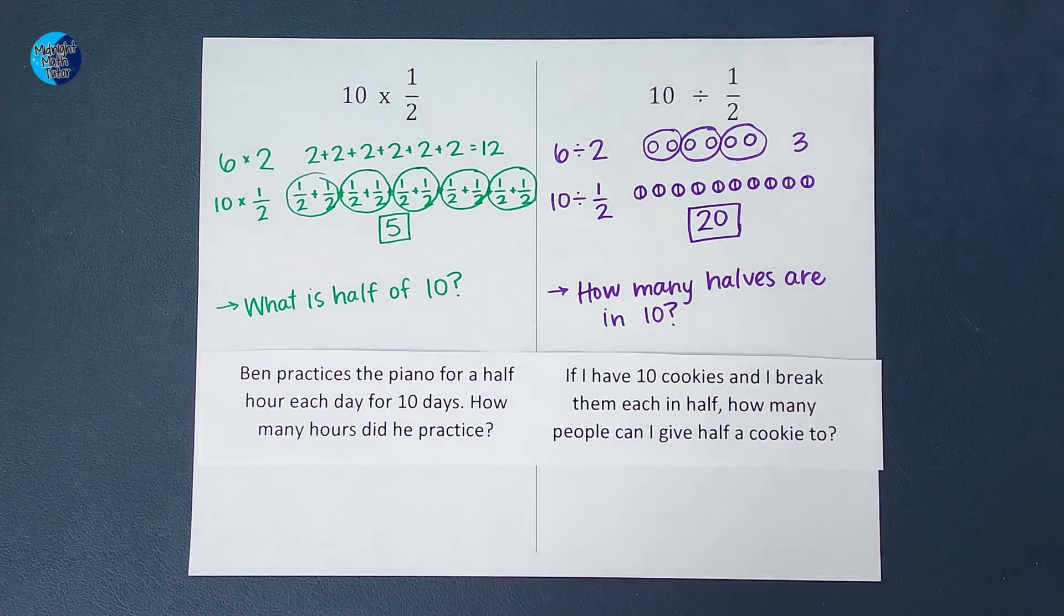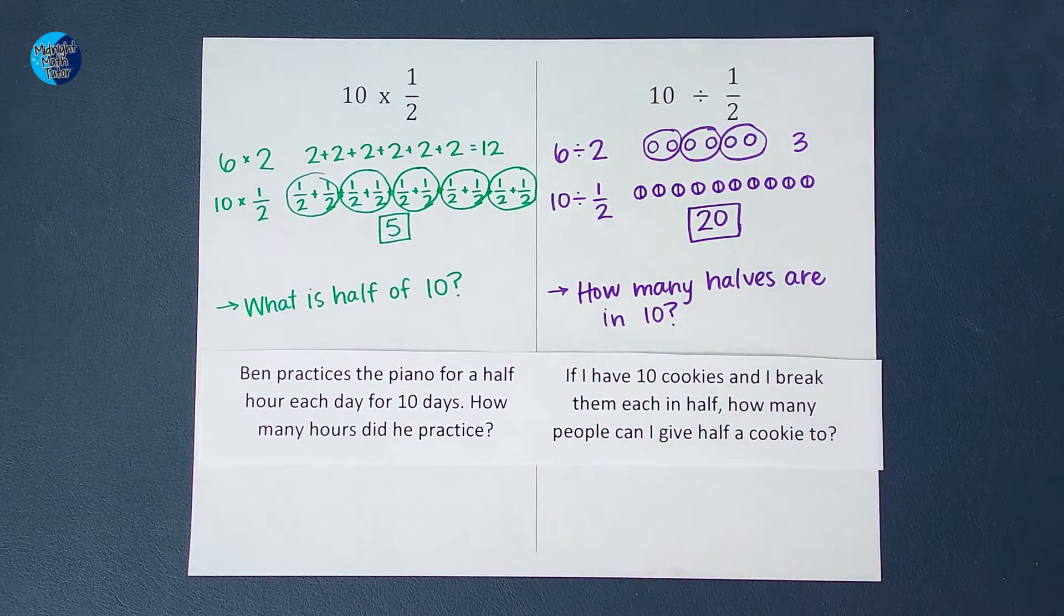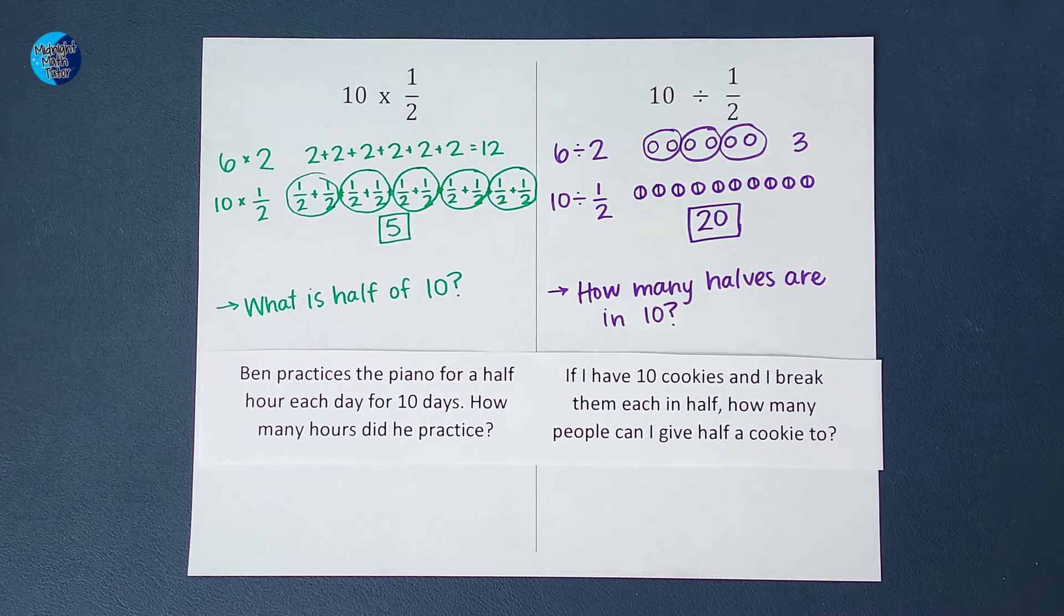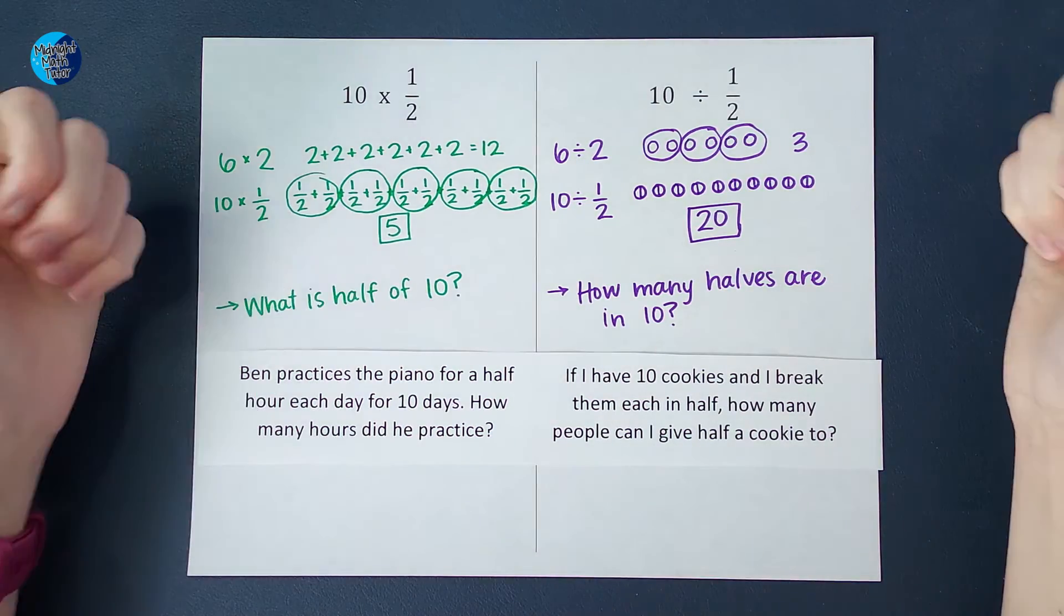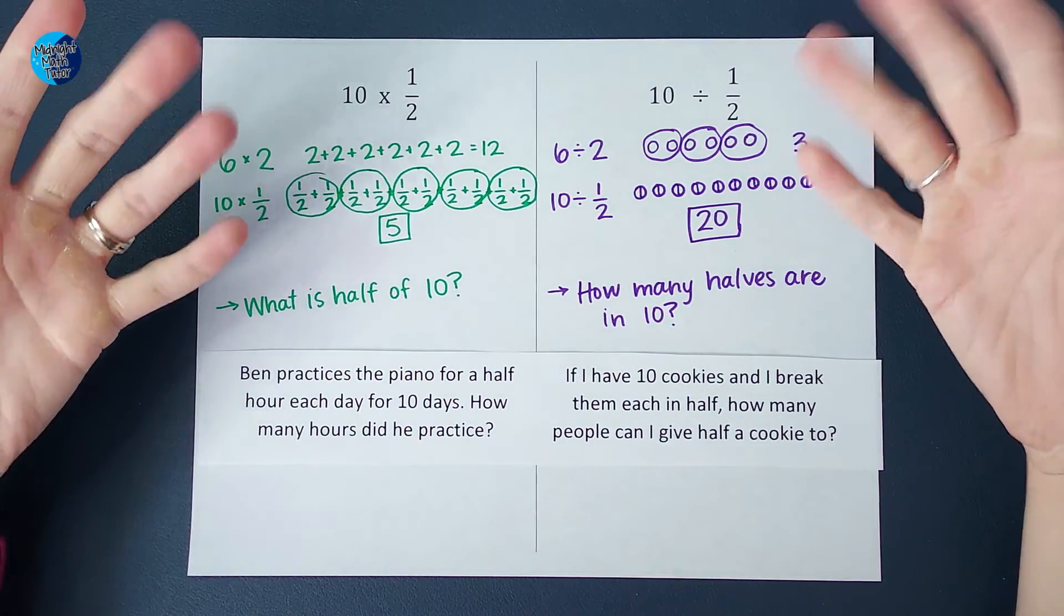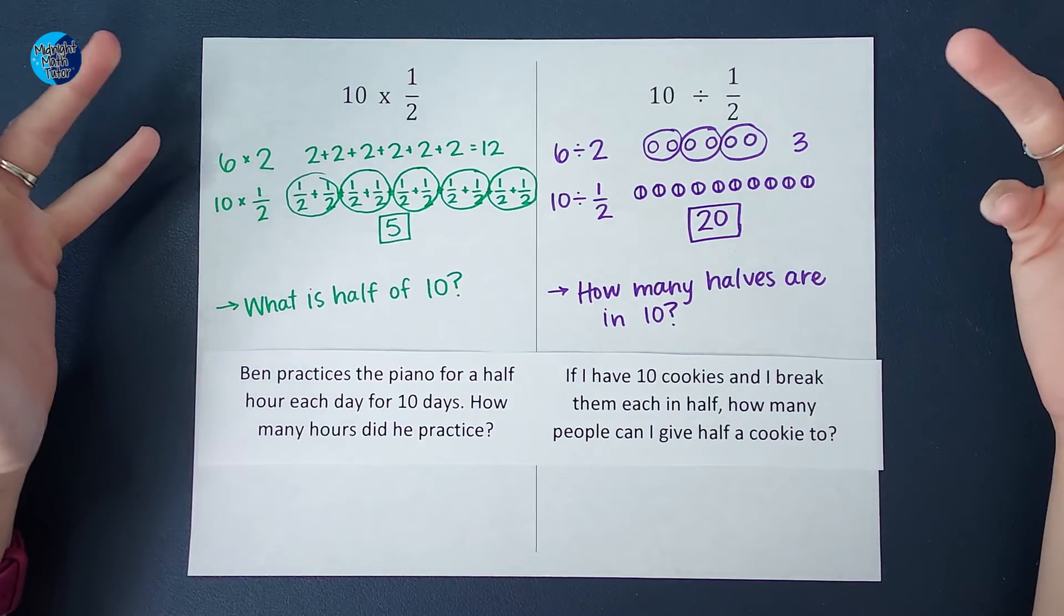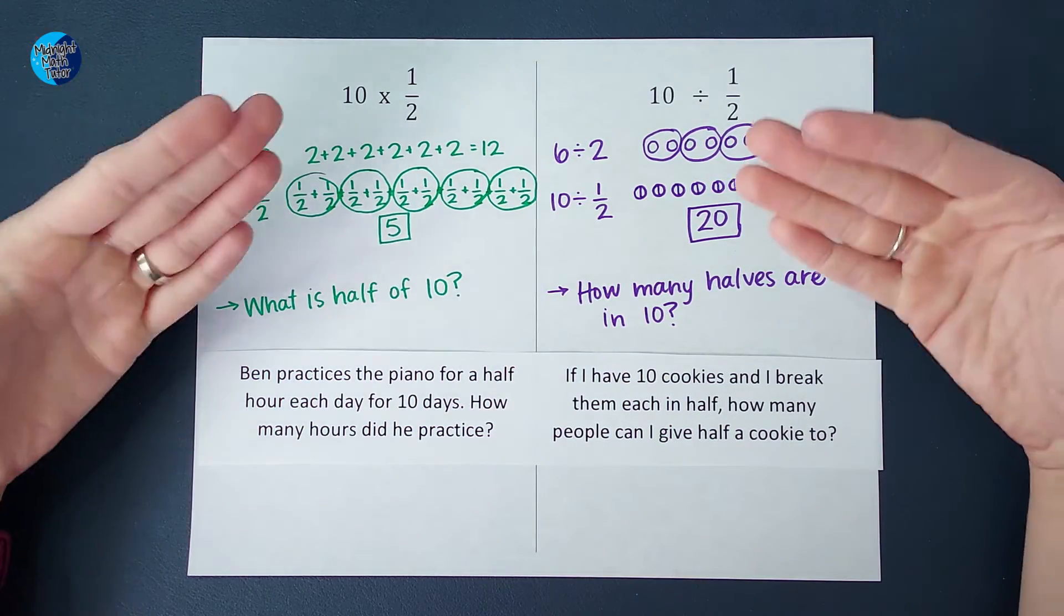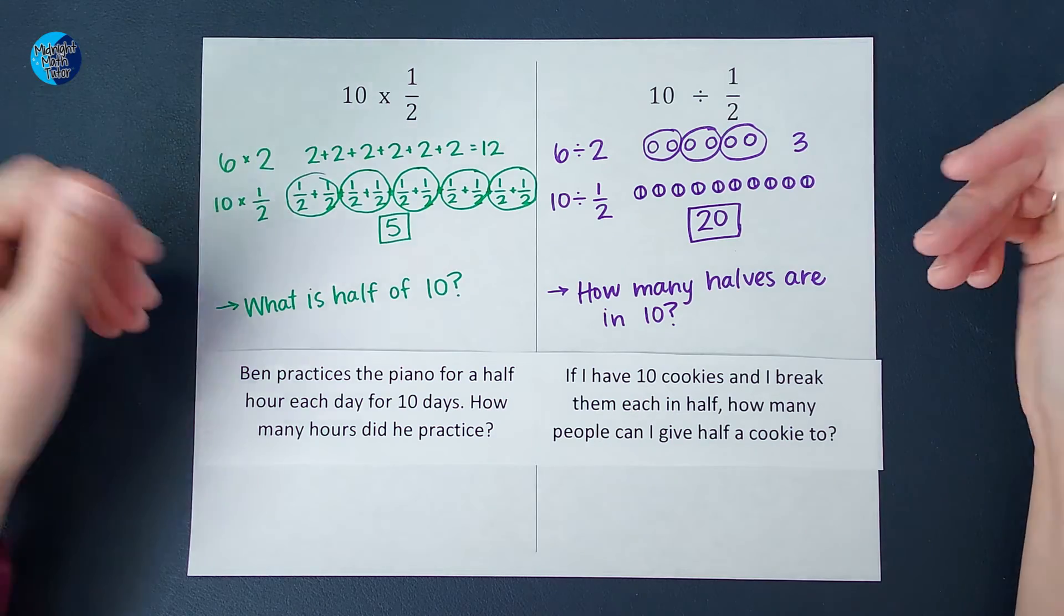But what about the other way? An example we could have here is if I have 10 cookies, I wish I had that right now, and I break them each in half, how many people can I give half a cookie to? Again, you could probably pretty easily be like, well, I can give it to 20 people, right? Oh my gosh. All right.